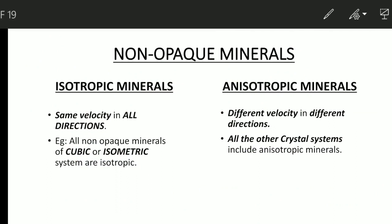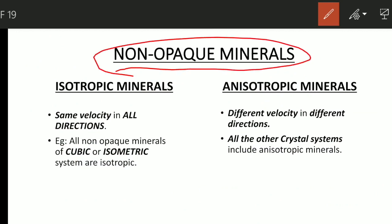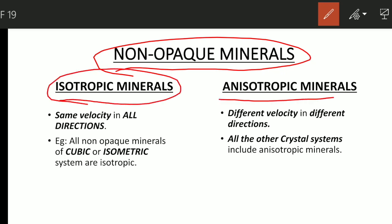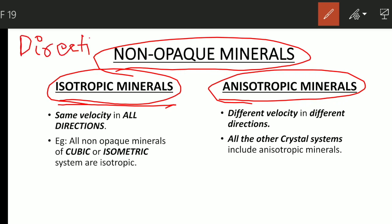Here is another classification — of non-opaque minerals. We had the broad classification of opaque and non-opaque minerals, and now the non-opaque minerals are divided into two types: isotropic minerals and anisotropic minerals. An isotropic property is direction independent, while anisotropic is direction dependent.